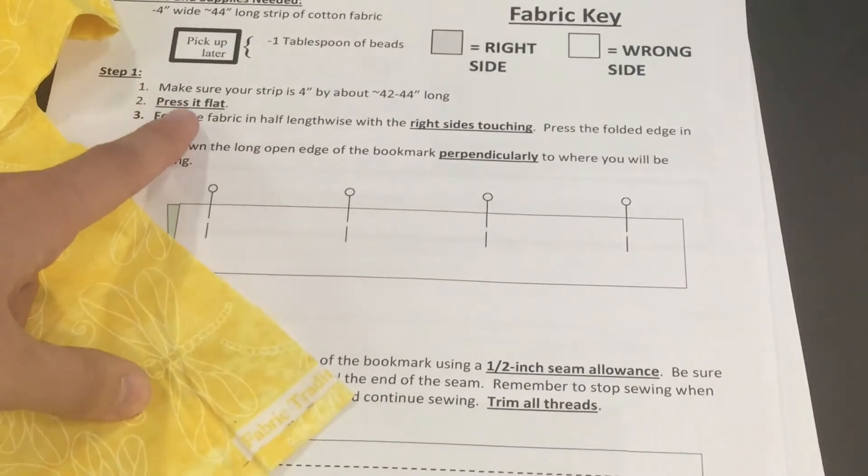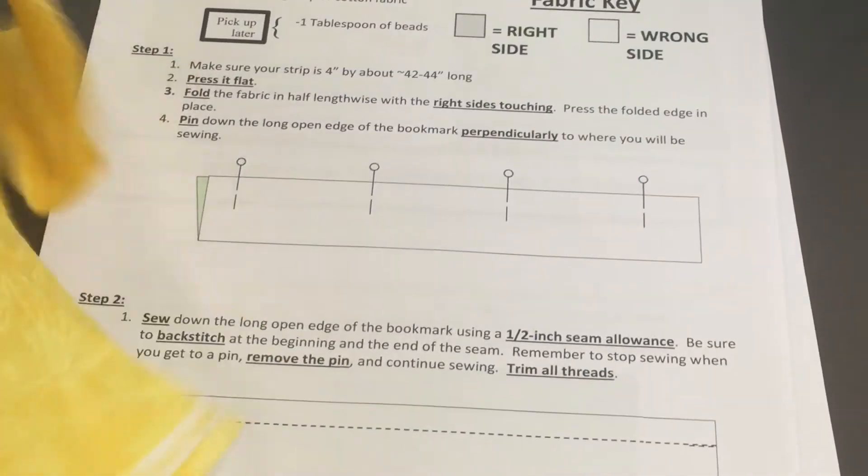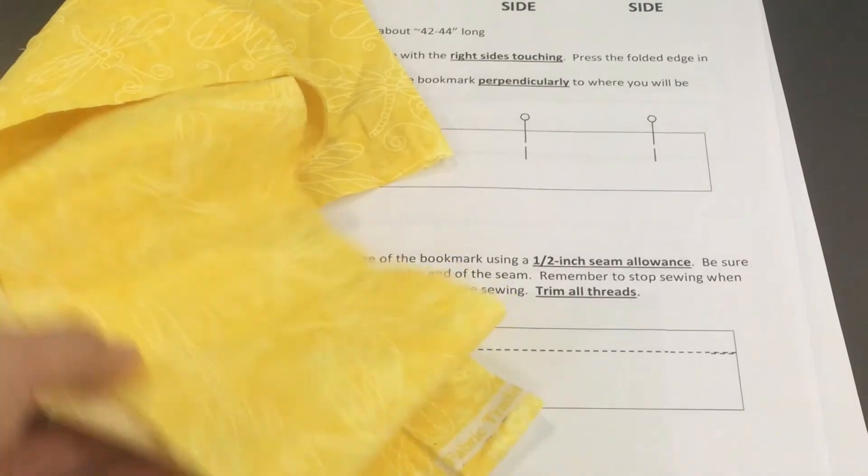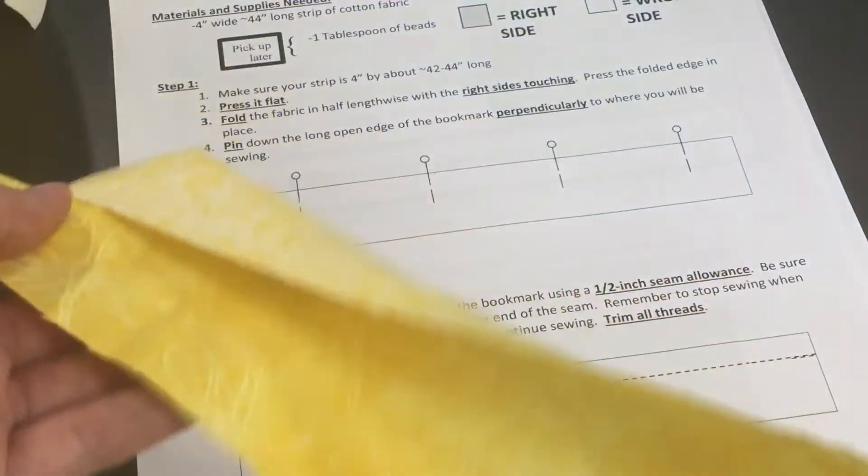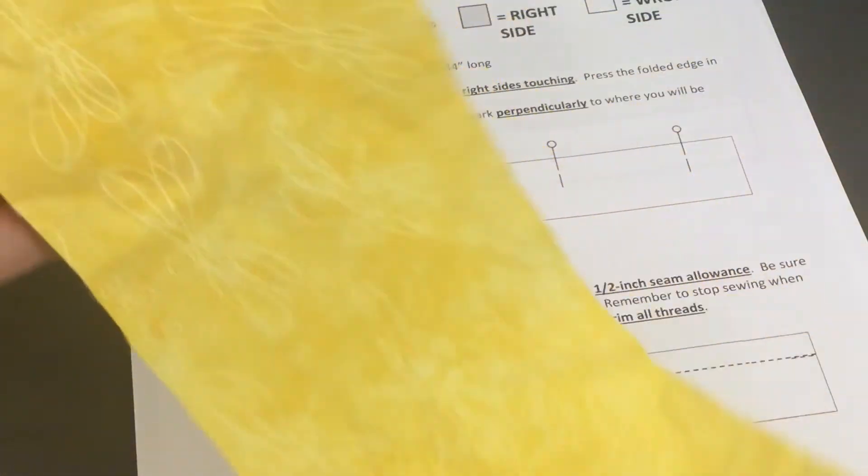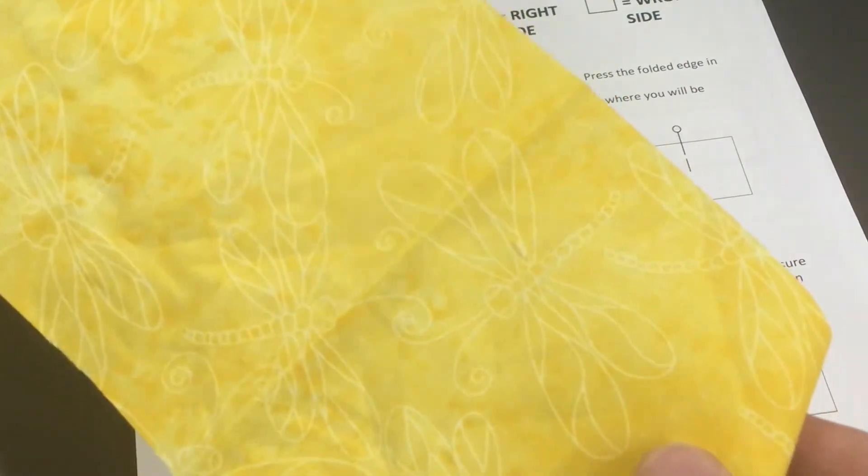Part two: press it flat. If you notice, my fabric has all sorts of wrinkles in it and creases. Those are going to cause problems for sewing later, so you're going to want to take it over to the ironing board and iron it flat.